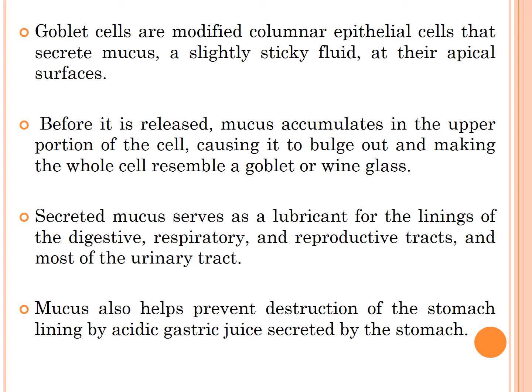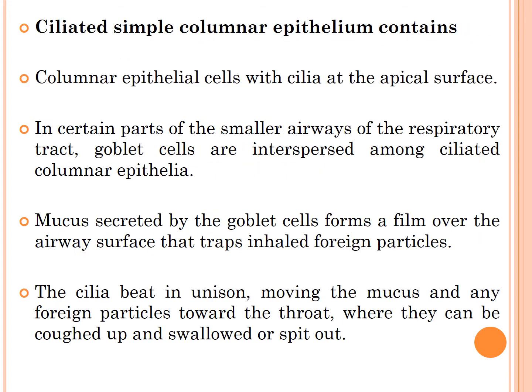Secreted mucus acts as a lubricant for the lining of the digestive, respiratory, reproductive, and urinary tracts. Mucus also helps prevent destruction of the stomach's lining by acidic gastric juice secreted by the stomach. The second part of simple columnar epithelium is ciliated: the columnar epithelial cells have cilia at their apical surface.